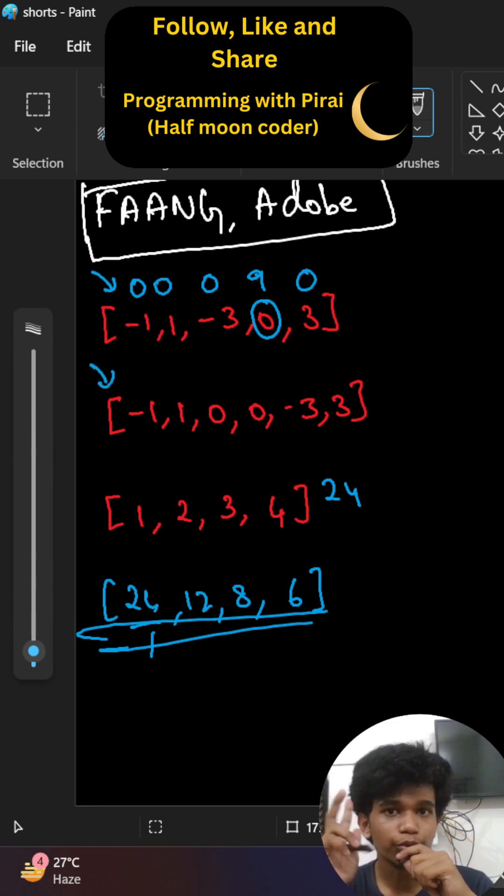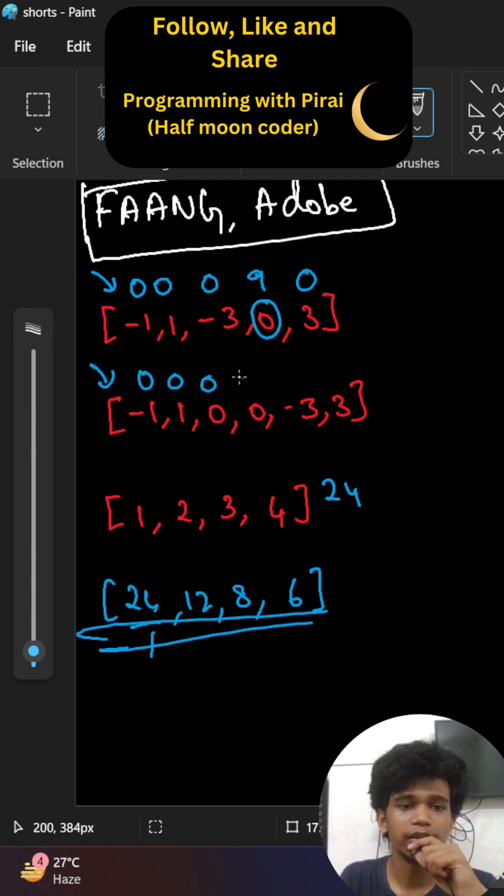In this scenario, there are two 0s, which means for 1 0, it is not included, but another 0 is included, right? So it will be 0. All elements will be 0 in this case.